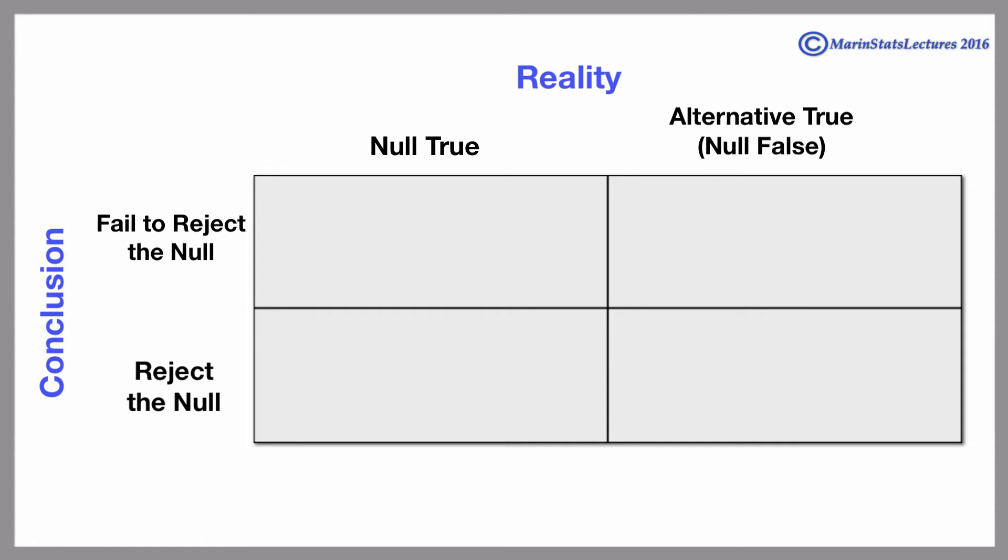Let's consider the case when in reality the null is true. If we fail to reject the null, we will be making the correct decision. On the other hand, if we reject the null, we will have made an error. We call this type of error a type 1 error.